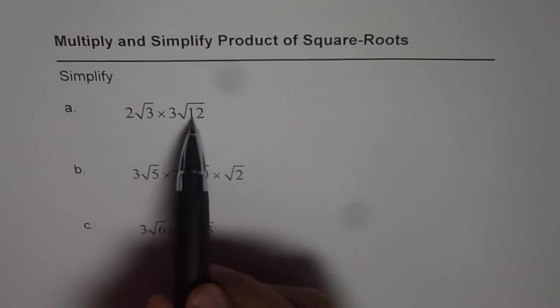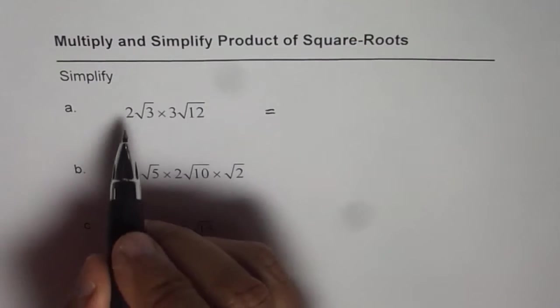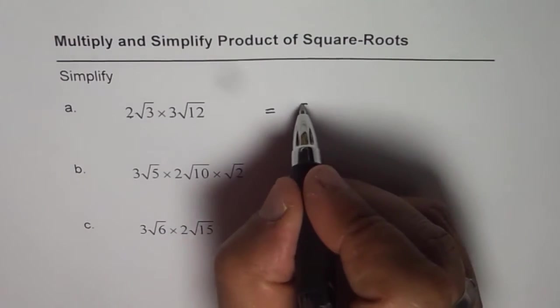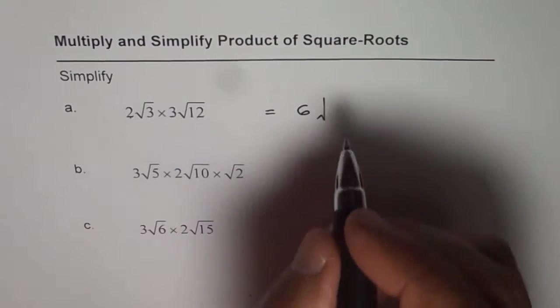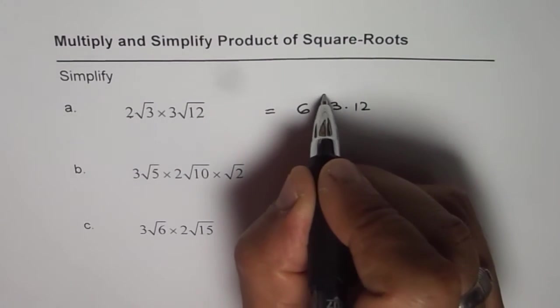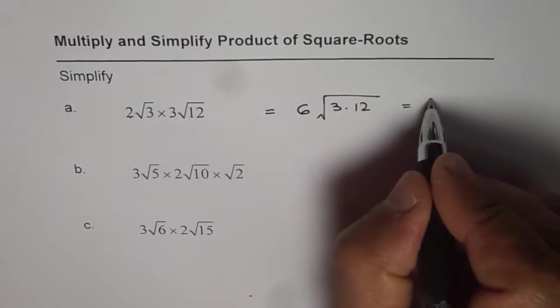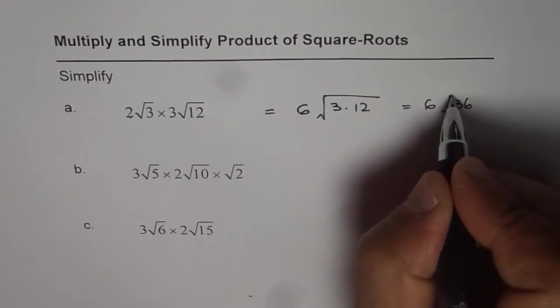So when you multiply square roots, the number within the square roots get multiplied and number outside also gets multiplied. So we get 2 times 3 as 6, and within the square root we have 3 times 12. So let me write 3 times 12 first. This dot indicates multiplication which gives us 6√(3×12). 12 is 36, right?